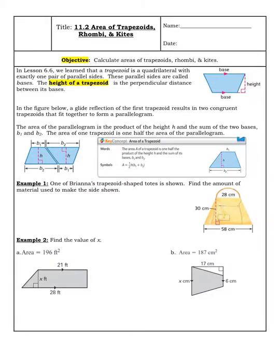Hey everyone, welcome back to chapter 11, section 2. I'm gonna talk about areas of trapezoids, also areas of rhombi and kites. Let's get into it.